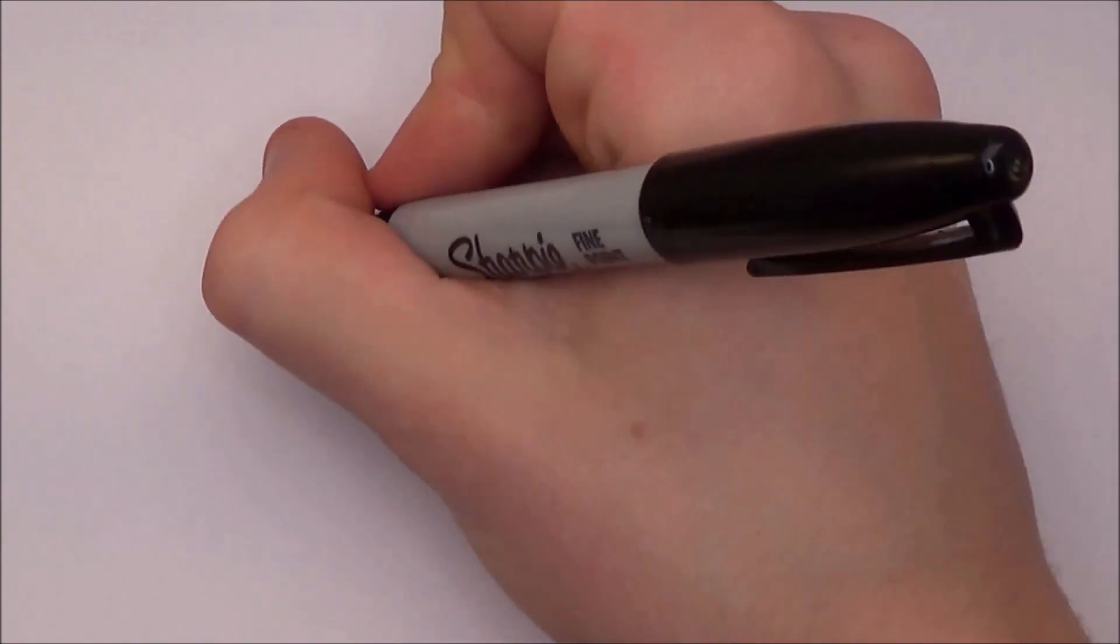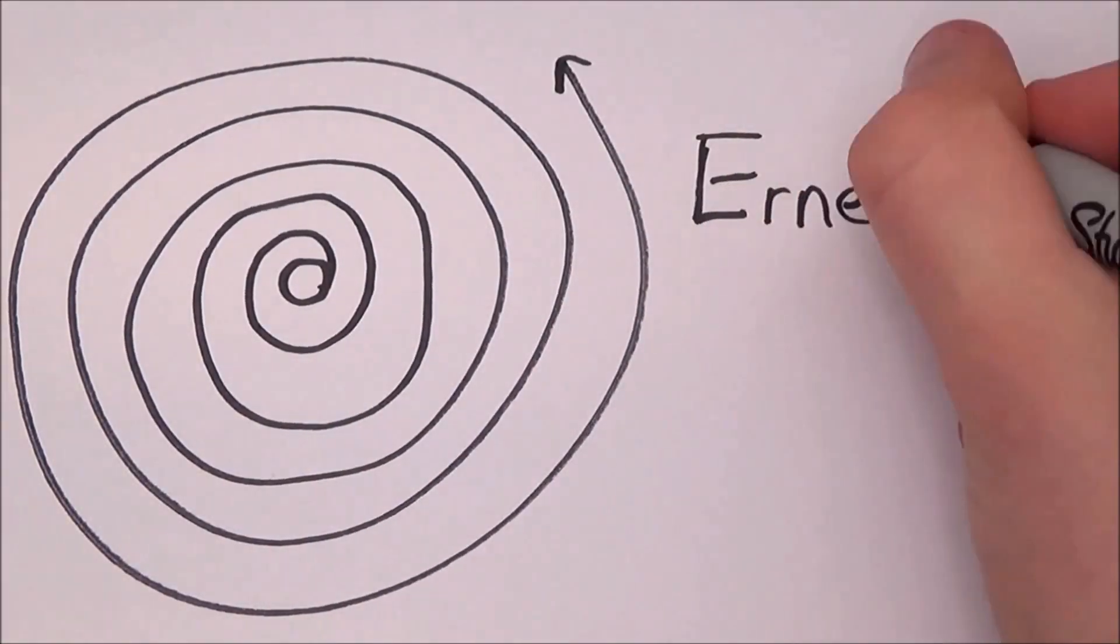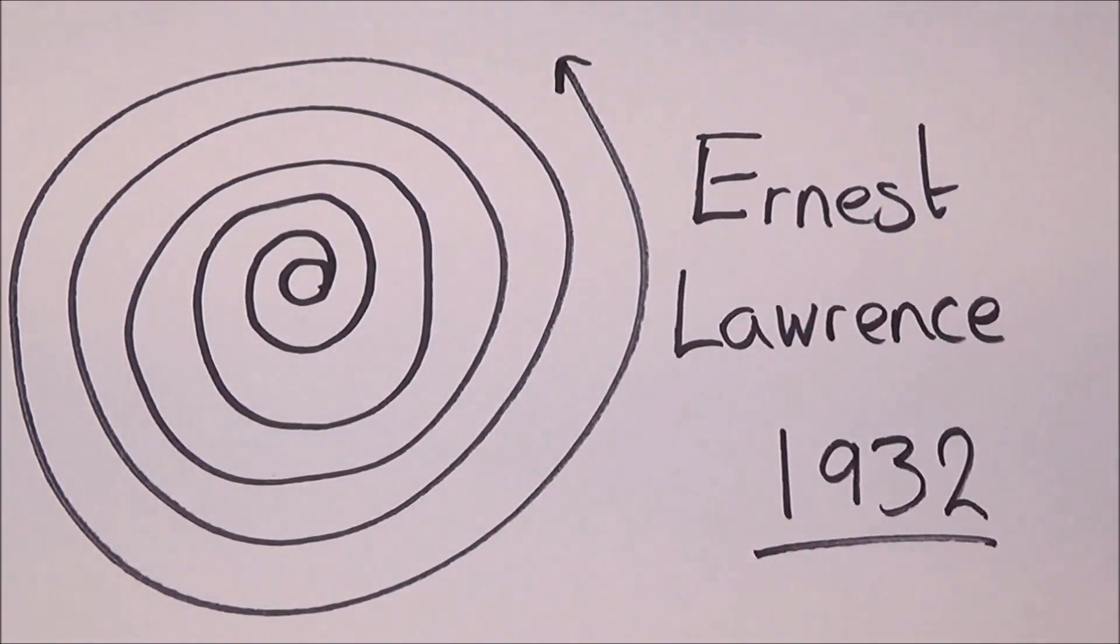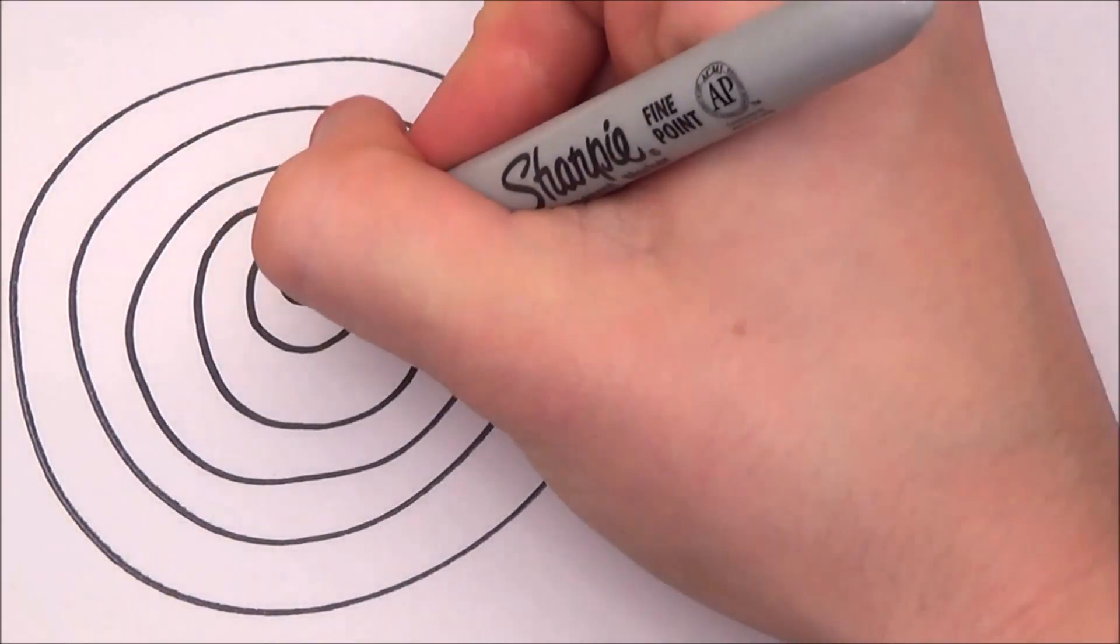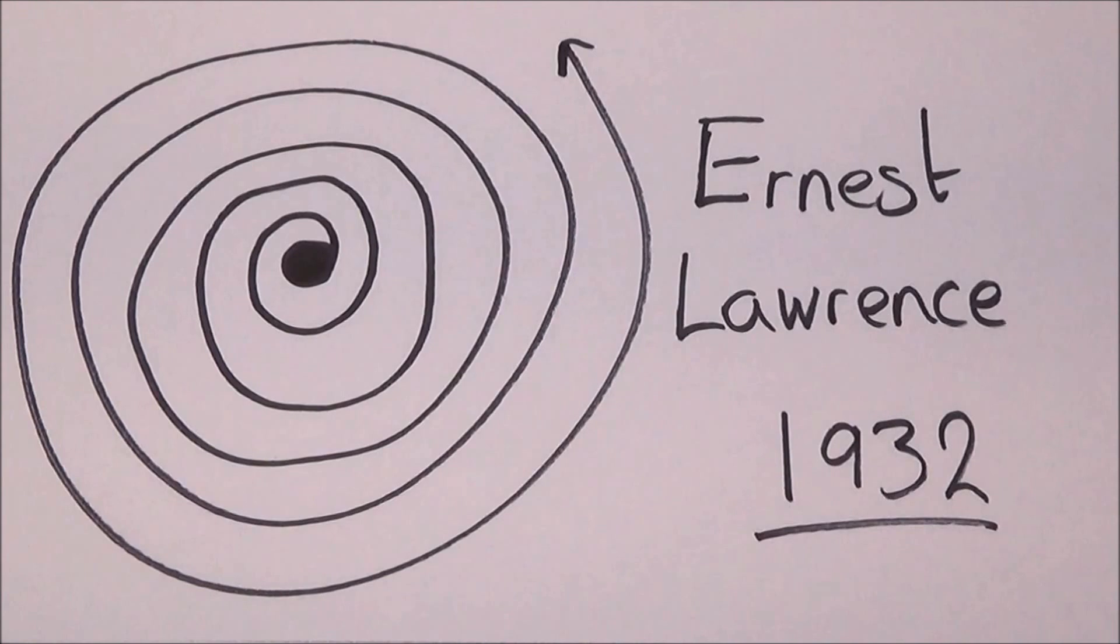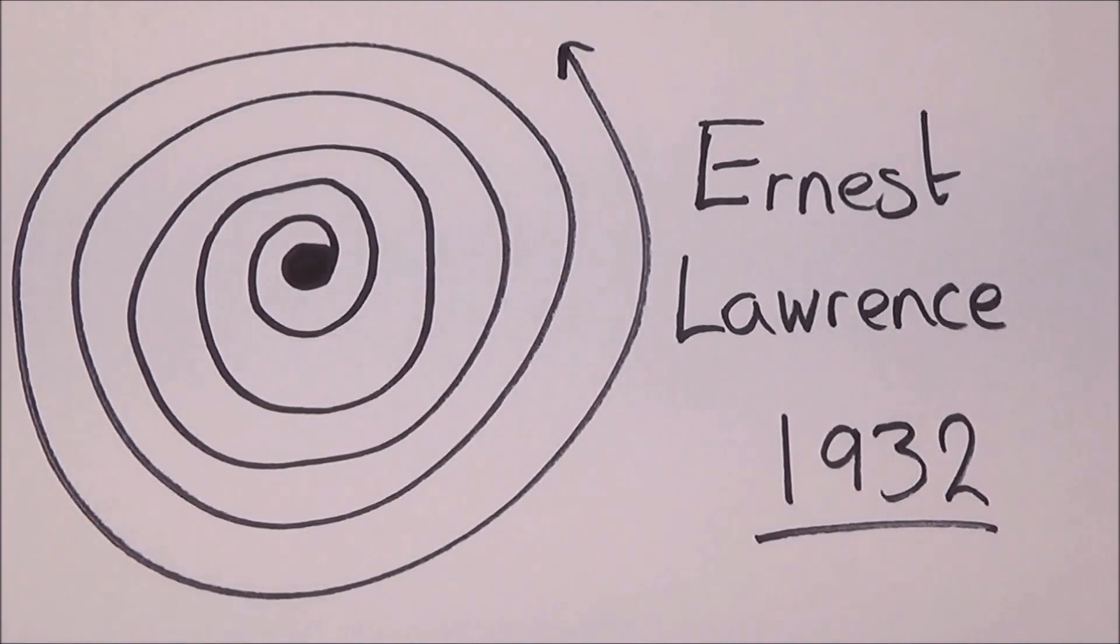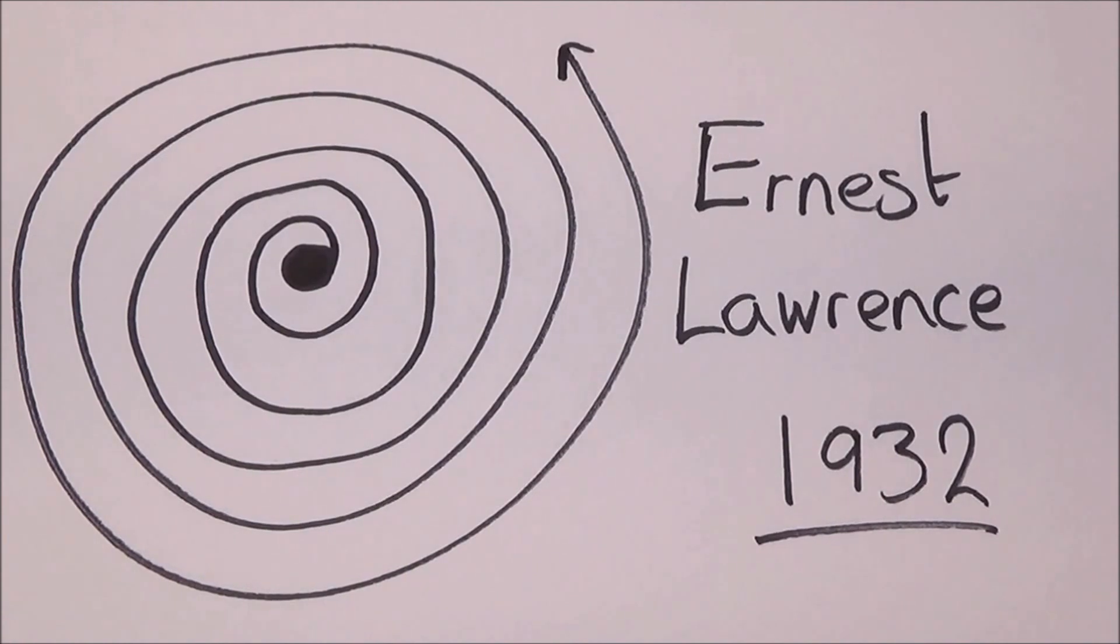And just for interest, you can also get particle accelerators that move in spiral shaped paths. And these are called cyclotrons. They were invented by one of our favorite guys, Ernest Lawrence, in 1932. In a cyclotron, the particle starts in the middle and is accelerated all the way to the edge, where it is at a velocity large enough to complete the experiment in which it is involved.